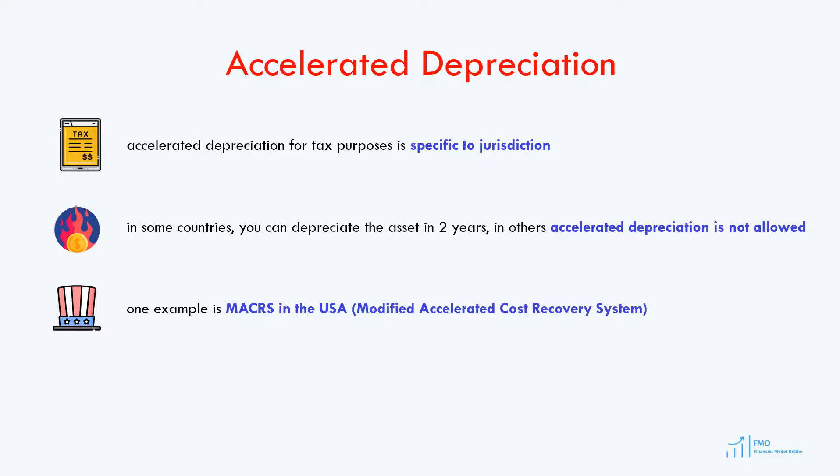One example of the accelerated depreciation method is MACRS in the United States. MACRS stands for Modified Accelerated Cost Recovery System. There are MACRS schedules for asset classes with 3, 5, 7, 10, 15, and 20 years. The asset class is a specific asset which is categorized as having a certain depreciable life, such as 3 years or 5 years.